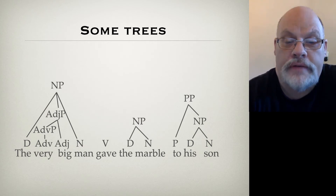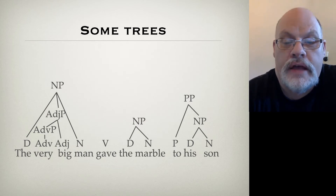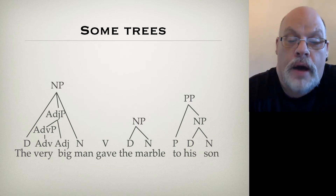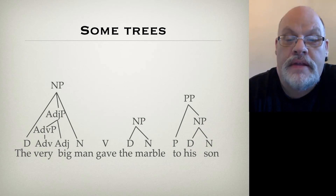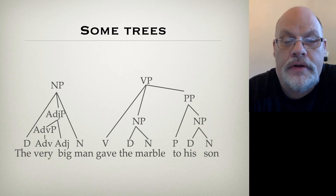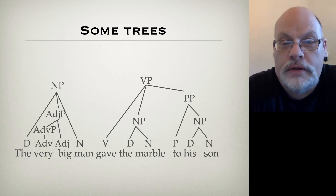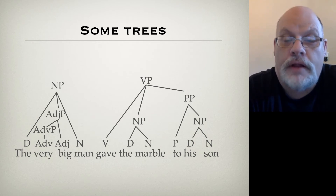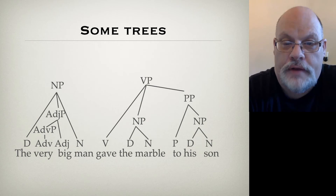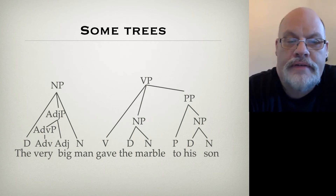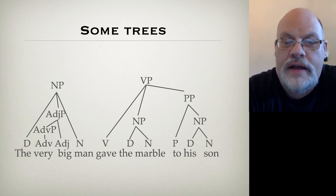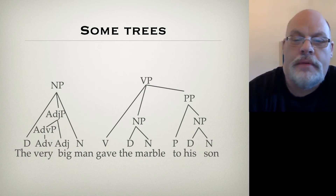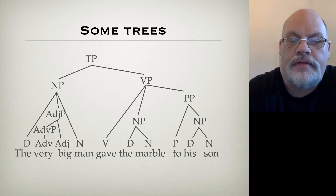The next step is verb phrases. This verb, 'gave,' has two modifiers: the marble and the prepositional phrase 'to his son.' Both modify the verb, so they're going to be sisters to the verb — they have the same mother, which is the verb phrase. Verb phrases consist of a verb followed by a noun phrase followed by a prepositional phrase. And our last step: a noun phrase followed by a verb phrase gives us a TP. And there we have the tree for the sentence.